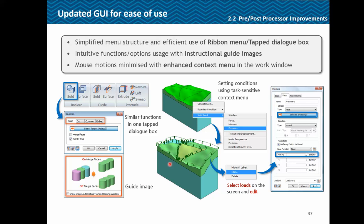The context menus are also task-sensitive. If you right-click on any solid, it will ask whether you want to generate the mesh, modify the boundary condition, or the load condition. You can directly apply loads and once applied, right-clicking shows options to hide, display, or delete it — making it more intuitive.